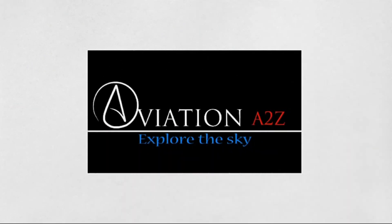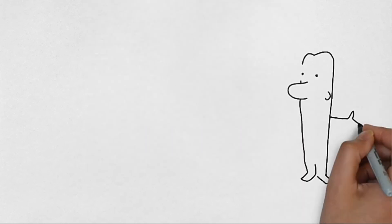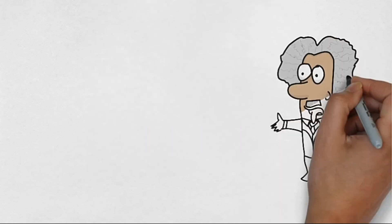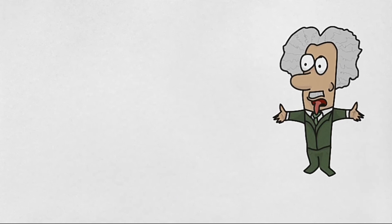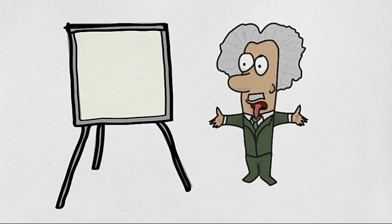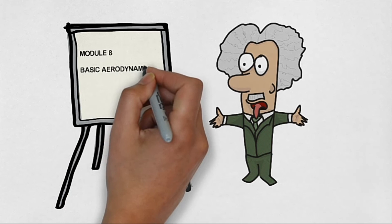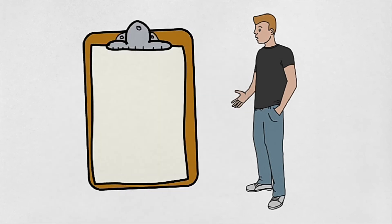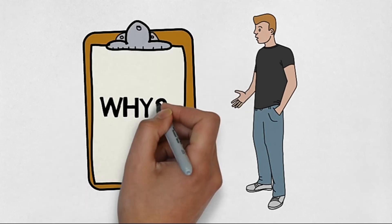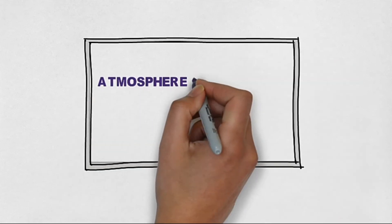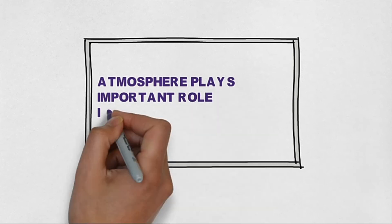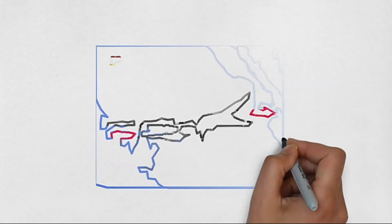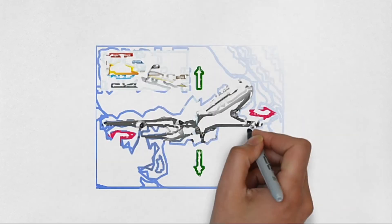Hello everyone and welcome to Aviation A to Z. Today we are going to study about Module 8: Basic Aerodynamics of Flights. The first topic is atmosphere. The question will come in your mind: why study atmosphere? The answer is very simple — the atmosphere plays an important part in the study of aerodynamics of an aircraft, because aircraft produce lift and thrust by the reaction of air present in the atmosphere.